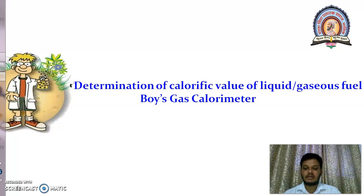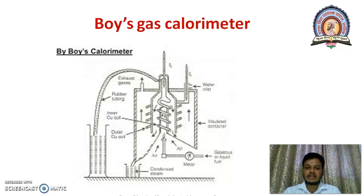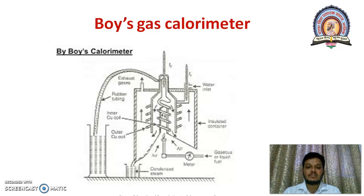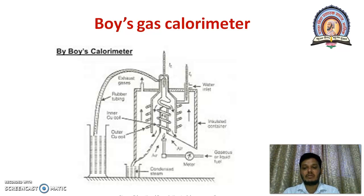In today's session we are going to study the Boyce gas calorimeter. Now, what is the principle of the Boyce gas calorimeter? This is the schematic diagrammatic representation of Boyce gas calorimeter. The principle of this method is that the Boyce gas calorimeter is useful to determine calorific value of the highly volatile liquid fuel and gaseous fuel. A known volume of gas is burned at a known and constant rate, and the liberated amount of heat is absorbed by circulating water, and the rise in temperature is recorded. On that principle, Boyce gas calorimeter works.